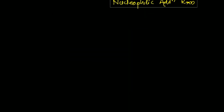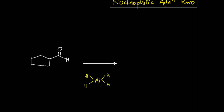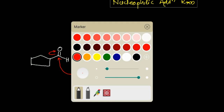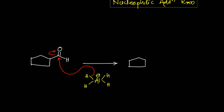Moving to the next example from the question: cyclopentane carboxaldehyde — a five-membered ring with an aldehyde group — reacts with lithium aluminum hydride (LiAlH4). The same chemistry applies here, but the difference is that the Al–H bond is more polar, more ionic, and more reactive than the B–H bond. The electron density from the Al–H bond attacks the carbonyl carbon, opening the bond to give a tetrahedral intermediate with O⁻ and H from the reagent.